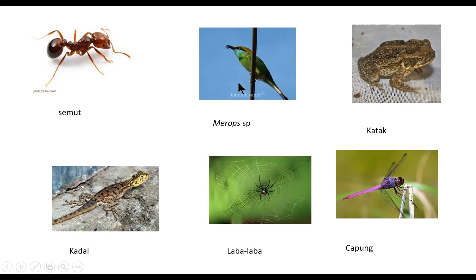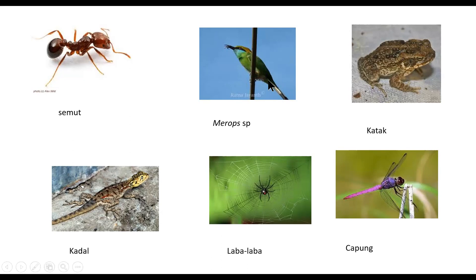Kemudian burung jenis Merops ataupun burung layang, ini dia memangsa lebah yang sedang terbang. Pada daerah-daerah yang merupakan habitat dari Merops, kondisi lebah madu yang hidup di situ banyak habis karena populasi Merops ini. Dia memakan serangga termasuk lebah madu, sambil terbang kemudian mencari serangga termasuk lebah madu yang bisa dimangsa.